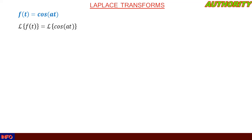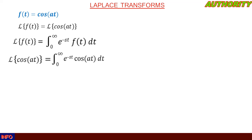Now let's take the second method, using the first principle. We have the function f of t equal to cos(at), and we are asked to find the Laplace transform. Going with the definition of the Laplace transform, it is the integral from zero to infinity of e^(−st) f of t dt, so the Laplace transform of cos(at) is the integral from zero to infinity of e^(−st) cos(at) dt.